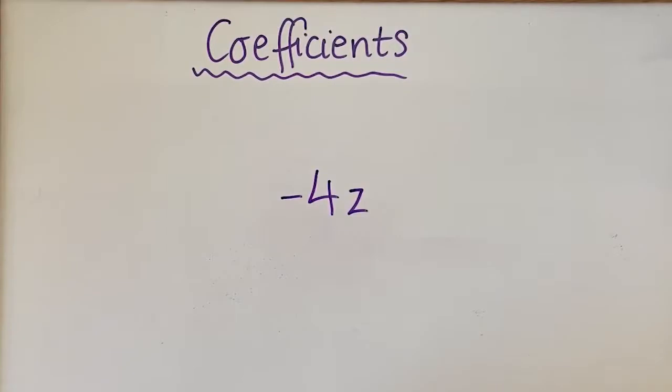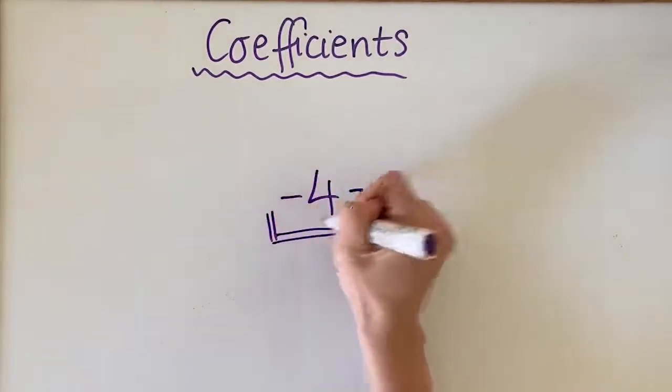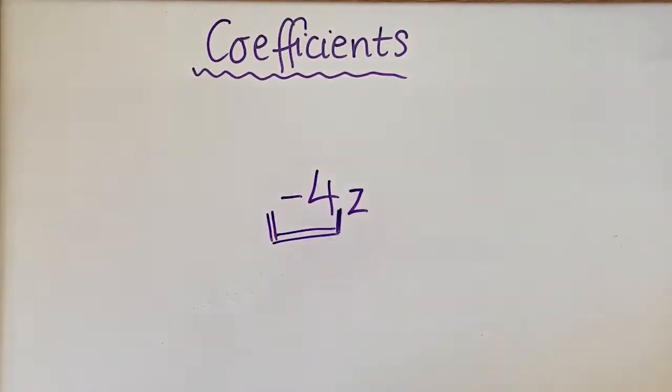In this example the coefficient is actually negative 4. So we need to consider the sign that's sitting in front as well. So this is negative 4, the coefficient.